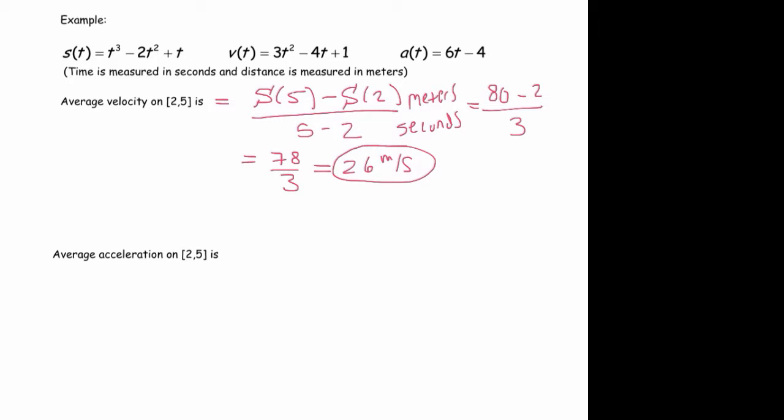However, we can now calculate it in a different way. We can calculate it in a different way because we know that the average velocity is also the average value of the velocity function. So you could also view it in terms of the integral. The average velocity is just the average value of the velocity function. So that's going to be one over five minus two, the integral two to five of our velocity function, which is 3t² - 4t + 1. So again, that's our velocity function.